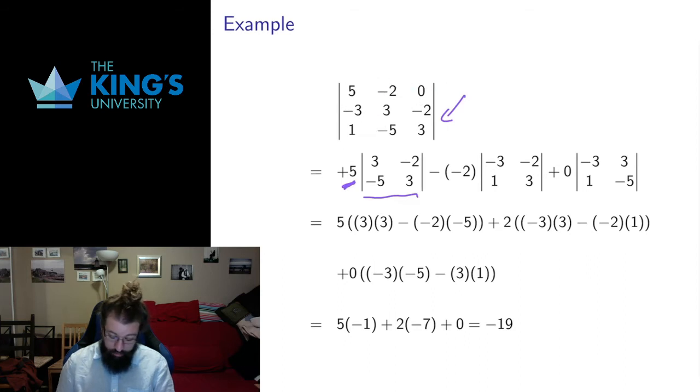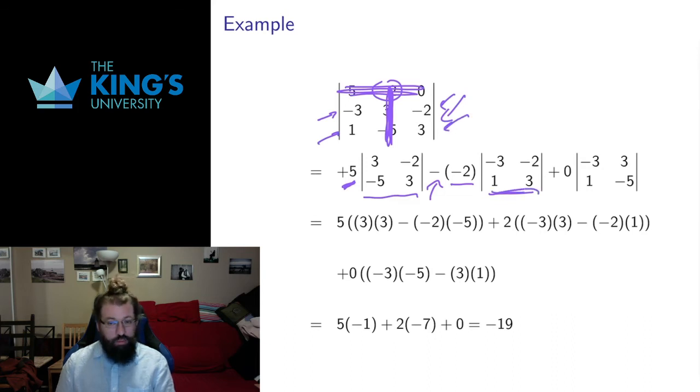Then I chose the first row, so I'm going to go to the next row. I'm going to have negative 2. So there's my negative 2. My checkerboard had a negative there, so I'm going to have subtract negative 2. That checkerboard applies. And then I'm going to cross out the row and column that that negative 2 is in. And what I have left with is negative 3, negative 2, 1, 3. So I just squish that together into a smaller matrix there. And then I keep going.